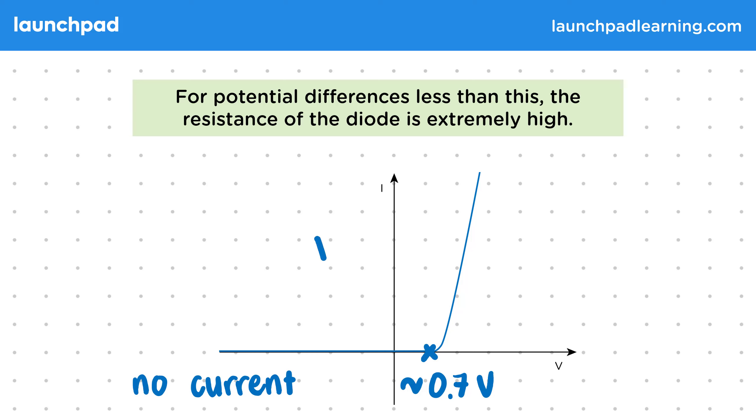Also, since the graph is almost horizontal, it has almost no gradient. This means the diode must have a very high resistance.